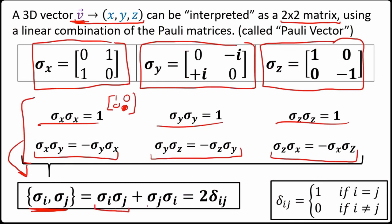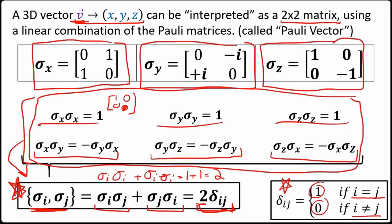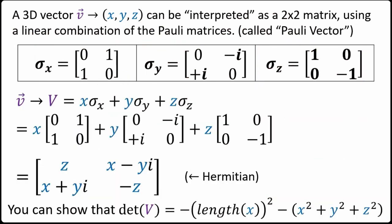The Pauli matrices σₓ, σᵧ, σ_z each square to the identity matrix, and switching the order of two different Pauli matrices gives a minus sign — the anti-commutator {σᵢ, σⱼ} = 2δᵢⱼ. This means σᵢ² = I and σᵢσⱼ = -σⱼσᵢ for i ≠ j. The Pauli matrices are assumed to be familiar from earlier work.